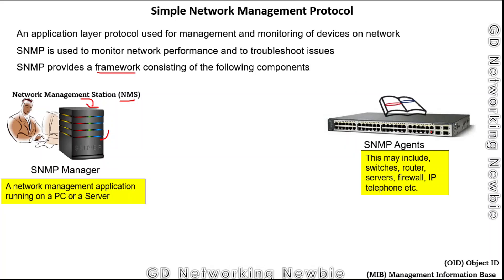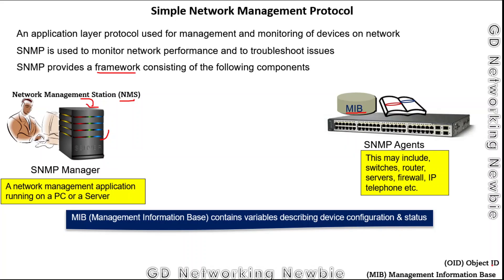On these devices we have a database, and that database is known as the Management Information Base (MIB). In the MIB we have variables that describe the device configurations or device status — for example, the interfaces such as Gigabit Ethernet or Fast Ethernet, and various operational parameters like the hostname of the device.